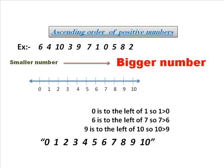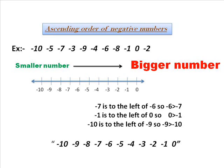Here comes the first — ascending order of positive numbers. I have taken numbers from 0 to 10 as an example and arranged them on a number line with unit distance. As 0 is to the left of 1, 0 is smaller number. 1 is to the left of 2, so 1 is smaller number. 2 is to the left of 3, so 2 is smaller number. So we can arrange these numbers as 0, 1, 2, 3, 4, 5, 6, 7, 8, 9, 10 in ascending order, as 0 is smaller and 10 is bigger.